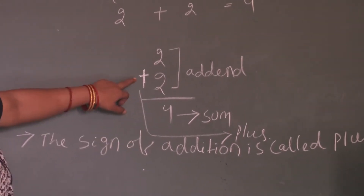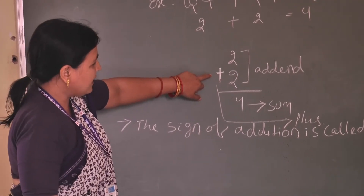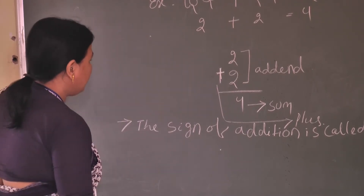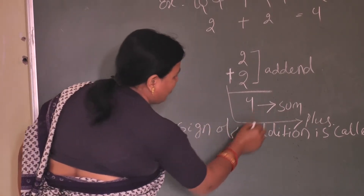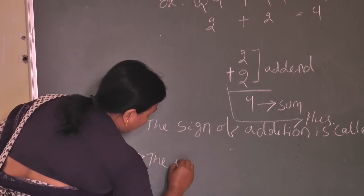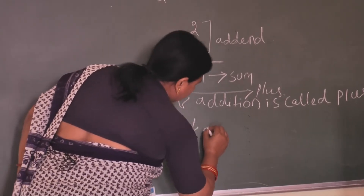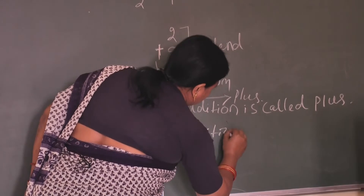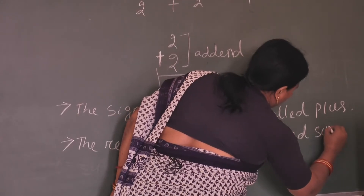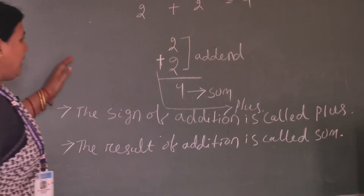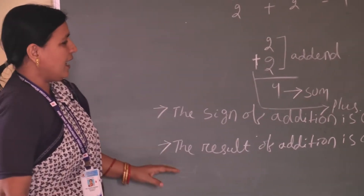Two plus two is equal to four. These two numbers are called Addend, and that one is Sum. This sign is the plus sign. In Addition, the sign of Addition is called plus — that is the sign. And four is the Sum. Sum means the result of addition.